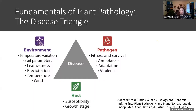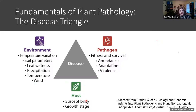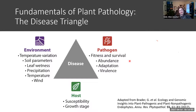The disease triangle is a concept I want you to think about. It's a fundamental concept in plant pathology, but it actually pertains to all pathology. In order for a disease to occur, you have to have environmental factors that make the environment favorable to disease. You have to have a host that is susceptible — and that susceptibility can be influenced by growth stage. And of course you have to have the presence of a pathogen. The pathogen influences include fitness and survival, abundance of the pathogen, host adaptation, and virulence.